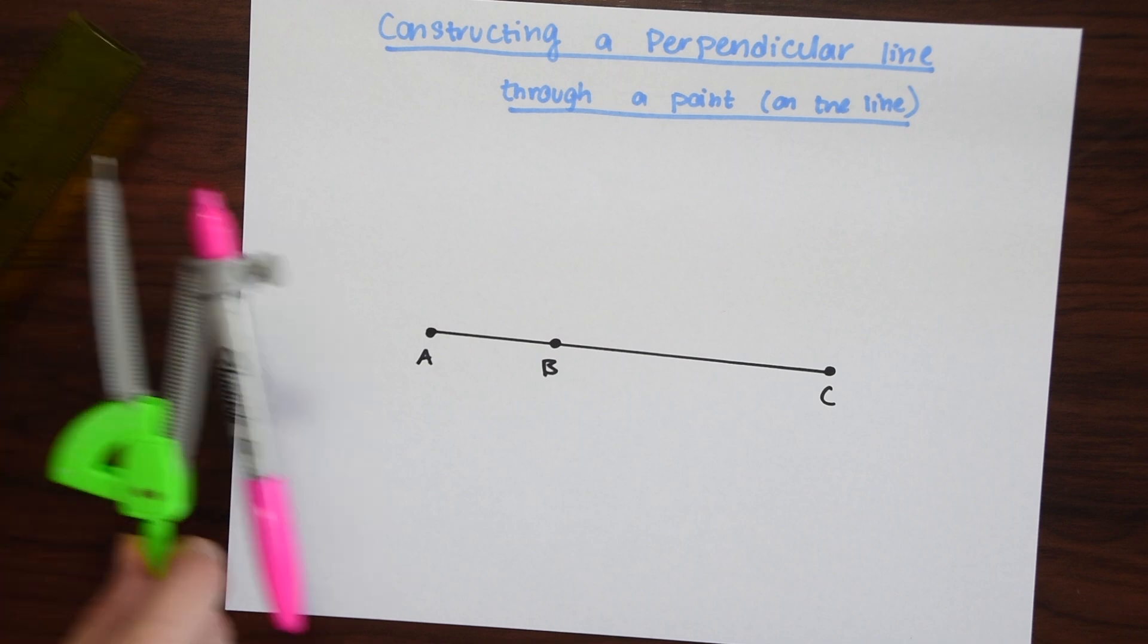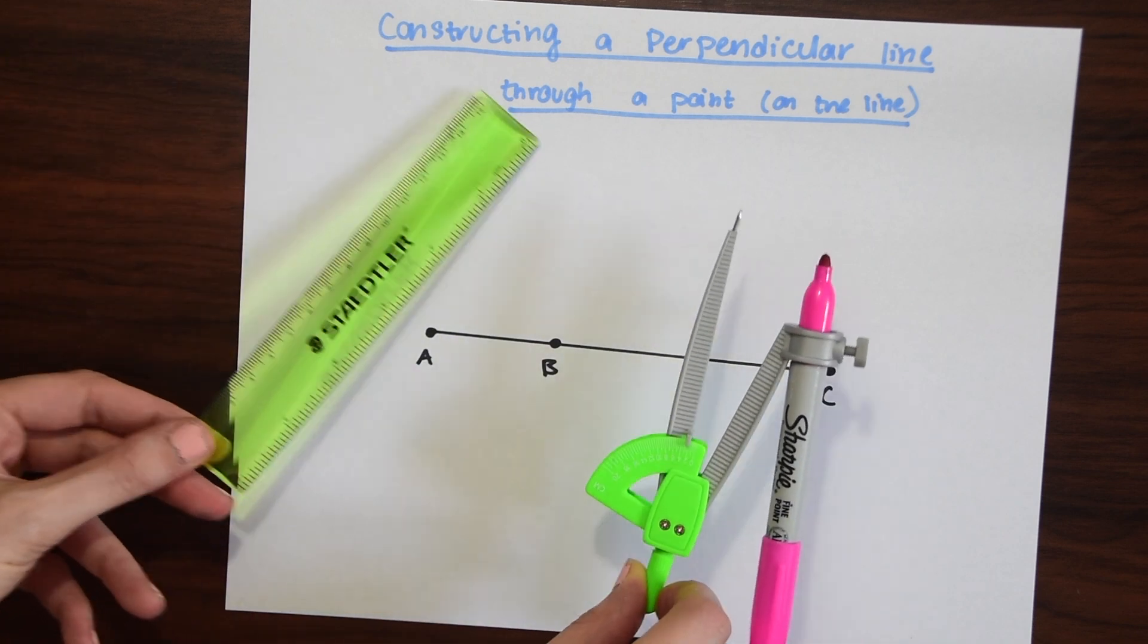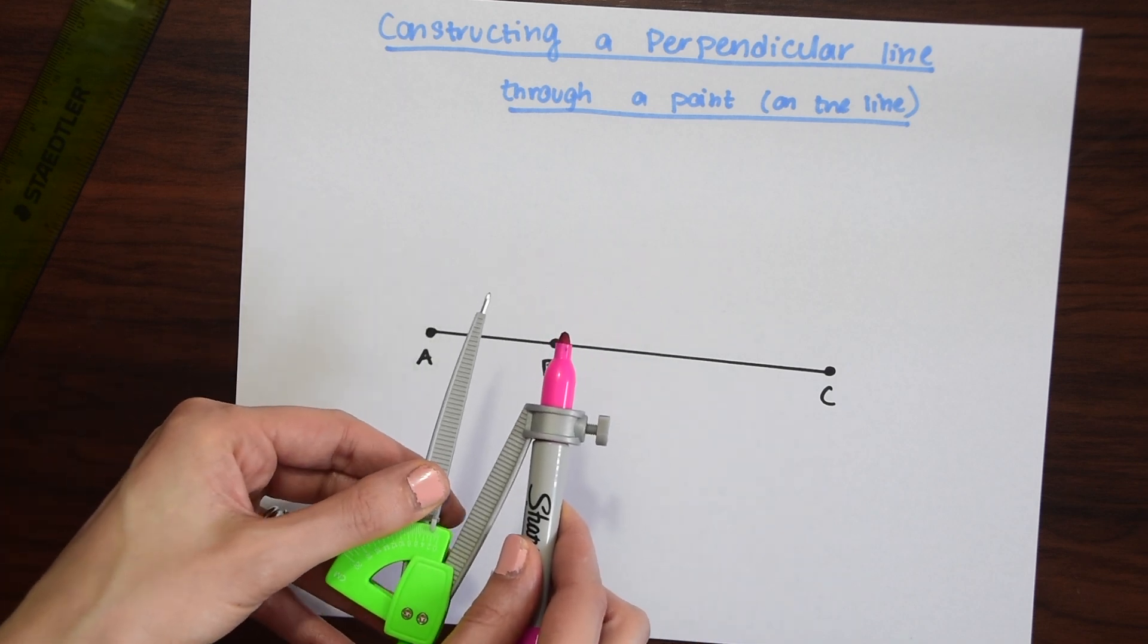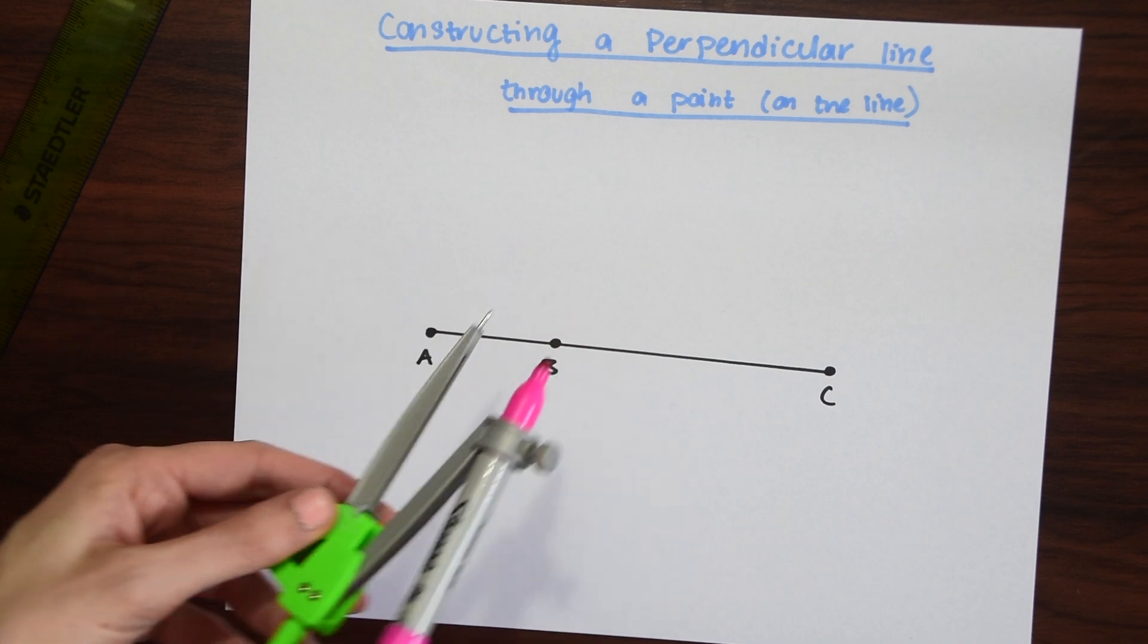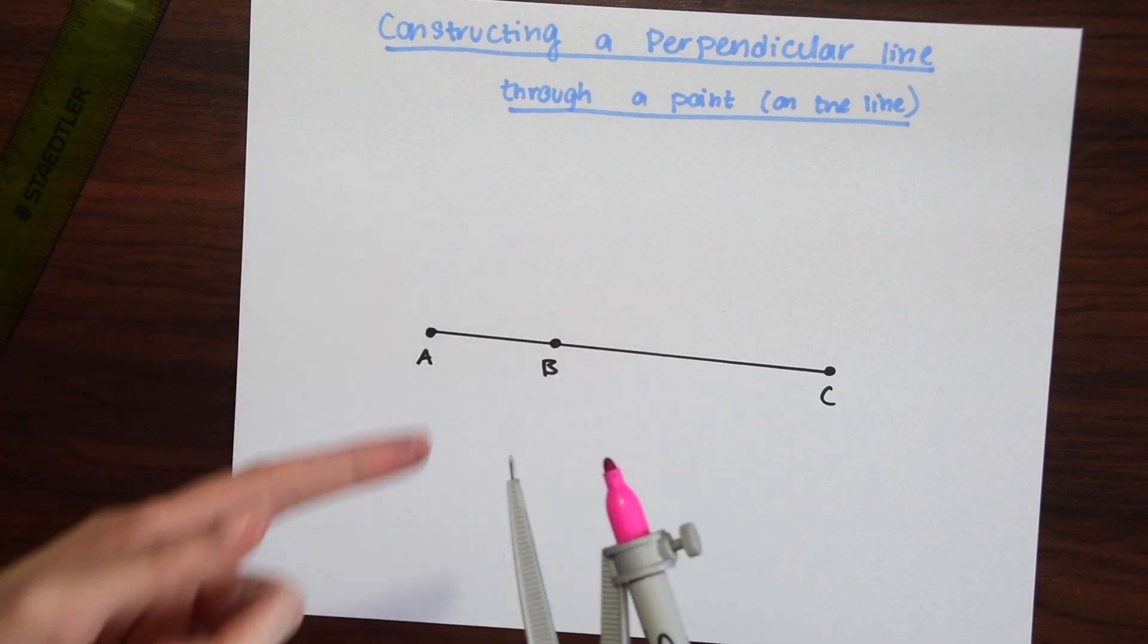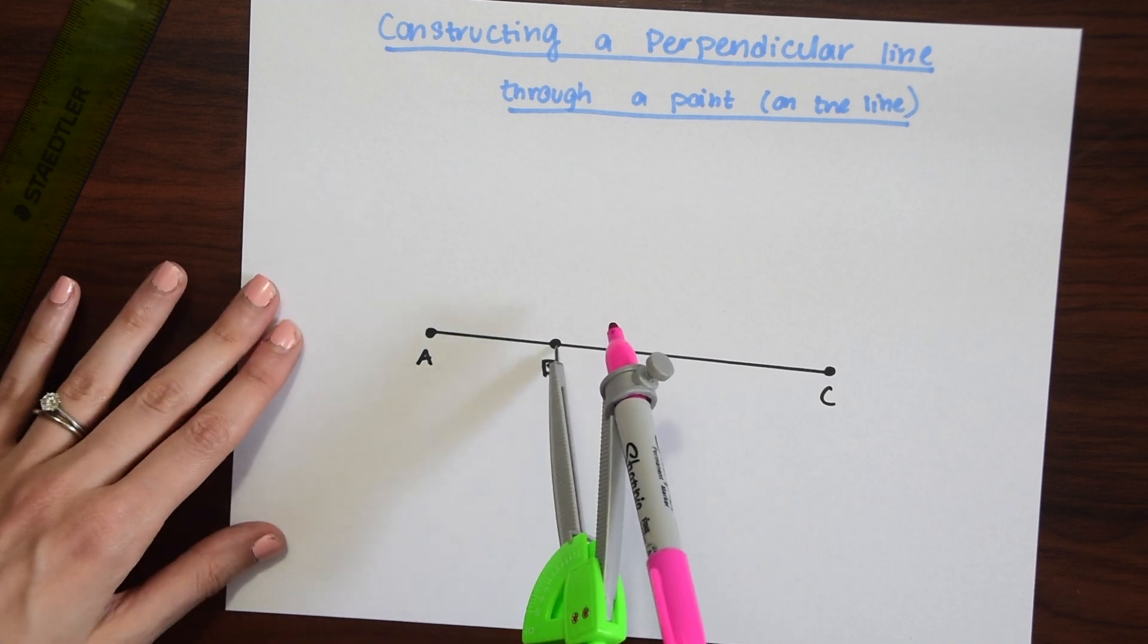So for this we will need a ruler or a straight edge and our compass. I'm going to open up the compass to something kind of smallish, any size will do, so we can fit it on this line. We're going to take the point of our compass and put it on point B,